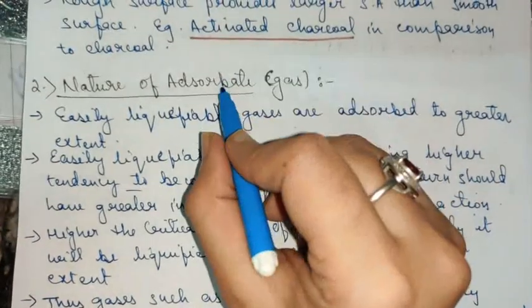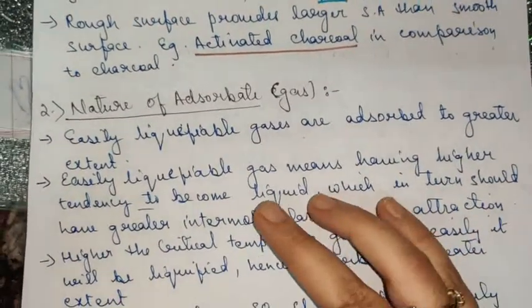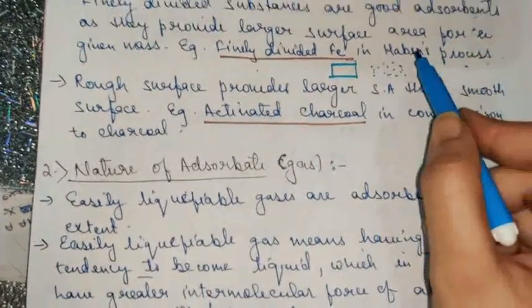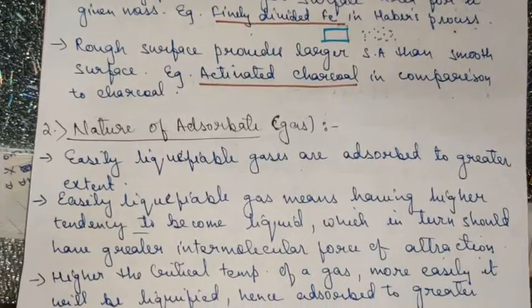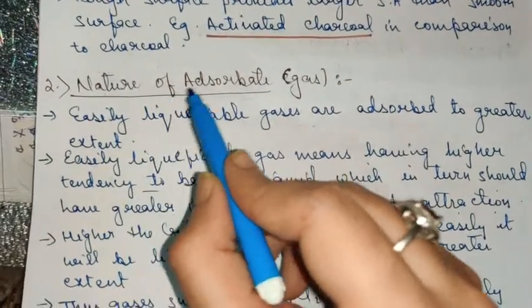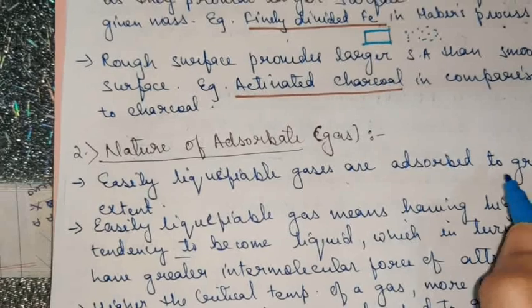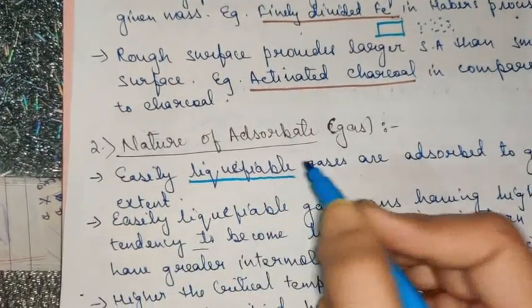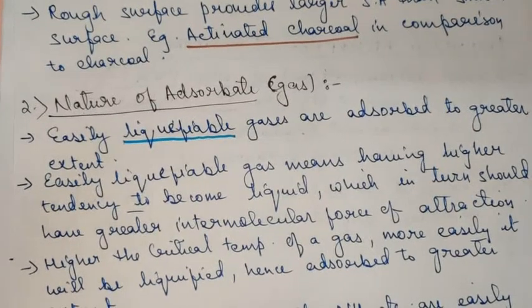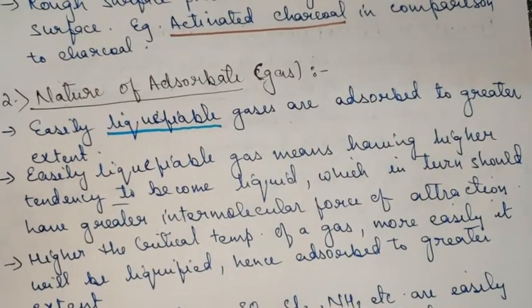Now coming to the nature of the adsorbate — we will be studying about the adsorption of gases primarily, as in the examples of Haber's process and miners. The key point for nature of adsorbate is: easily liquefiable gases are adsorbed to a greater extent. Gases which can be liquefied easily behave as better adsorbates and get easily adsorbed over the surface of the adsorbent.